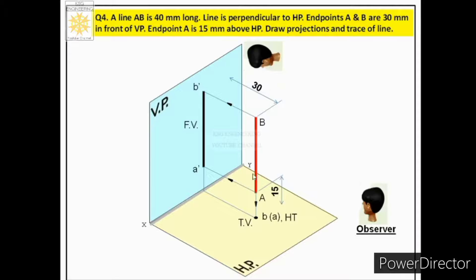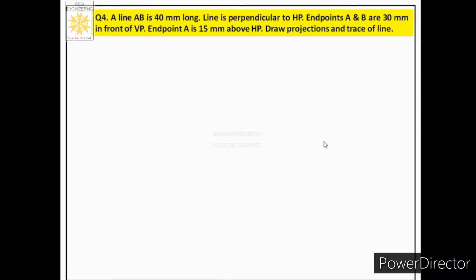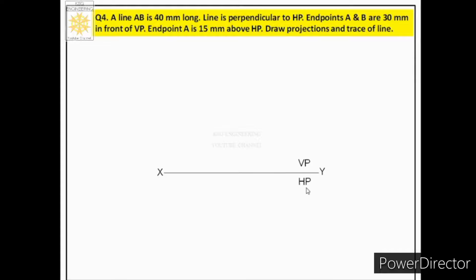We have seen case 4 in the pictorial view. Now let us understand how to represent this case on paper. Whenever solving any problem on projections of lines, we first identify the quadrant. From the words 'in front of VP, above HP,' we identify the first quadrant. The second step is to draw the quadrant on paper: we draw reference line XY, with the space above as VP and space below as HP.